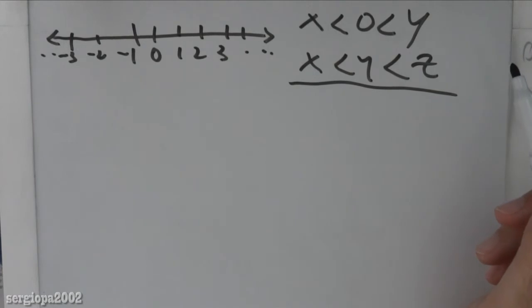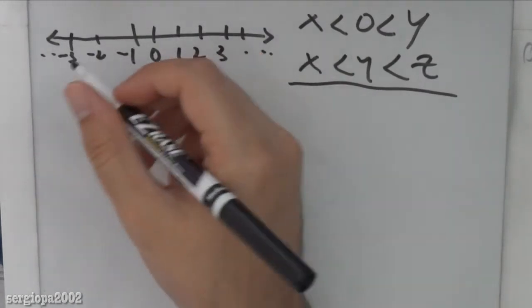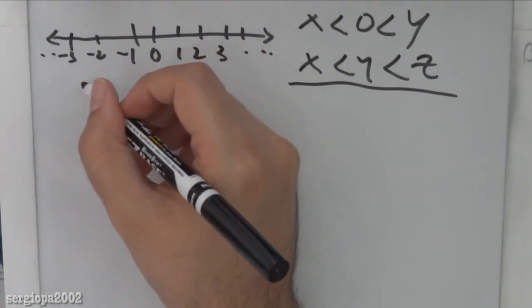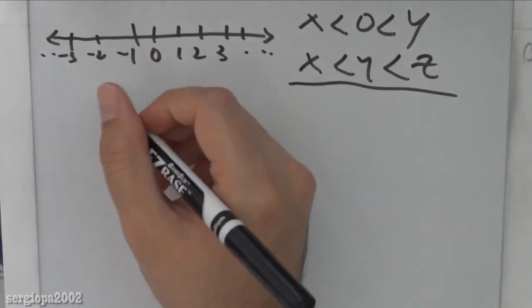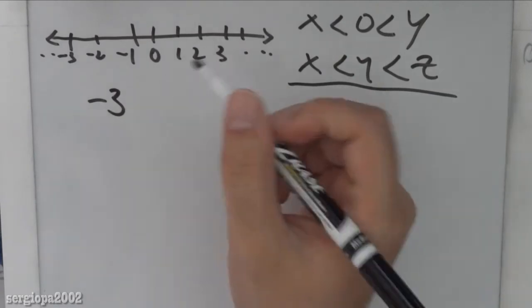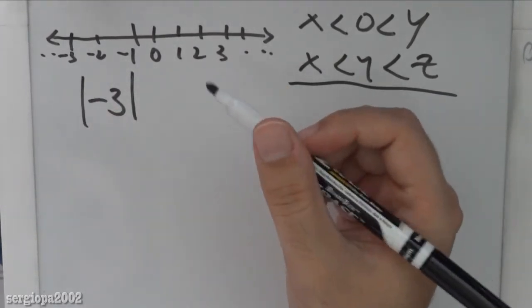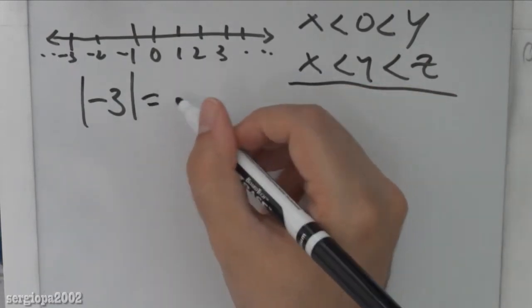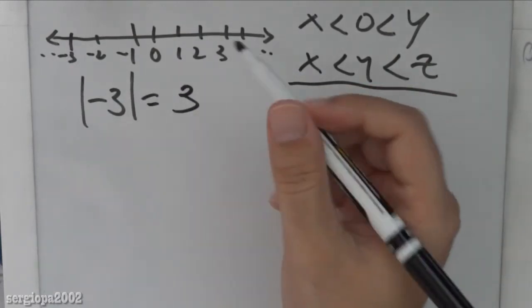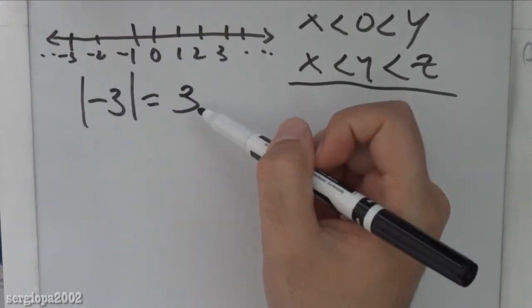Another concept that we need to remember is the absolute value. The absolute value of a number is expressed with these two bars. So for example, if I have minus 3 and I need to get the absolute value of that number, all you have to do is just put it between these two bars and that will equal the positive of that number. So no matter what number is here, if it's negative, it will transform it into positive.